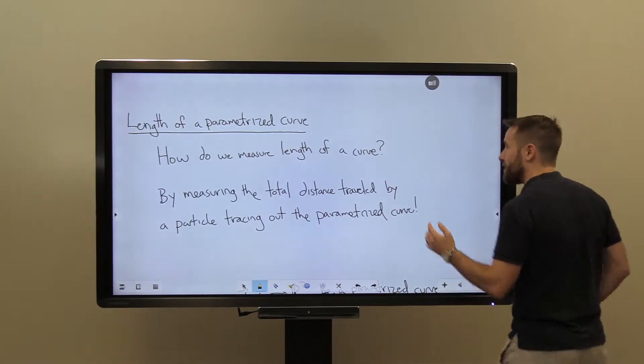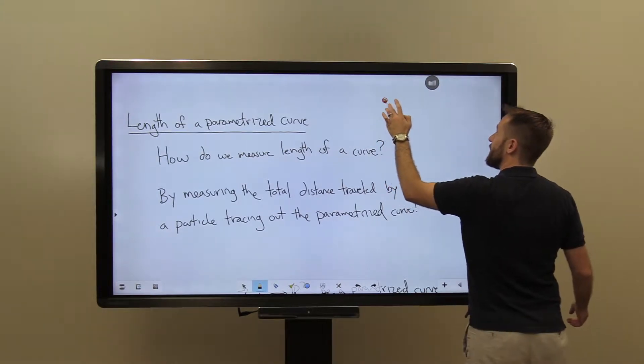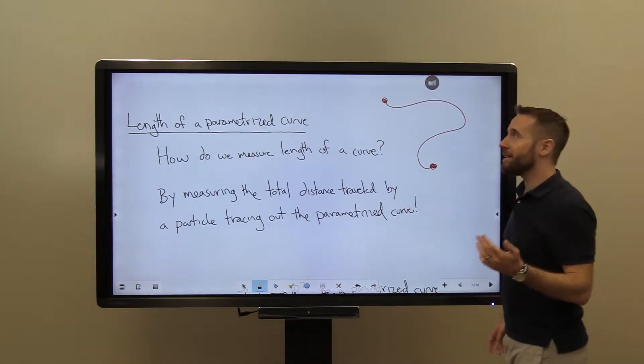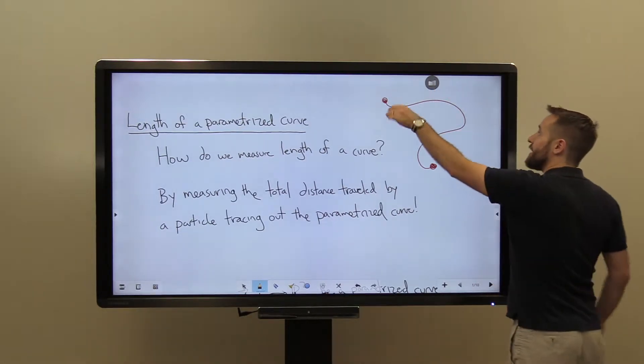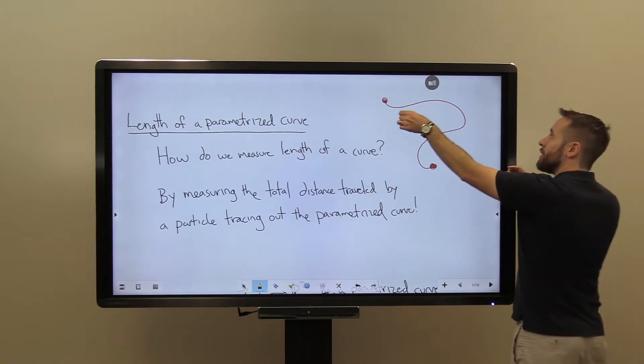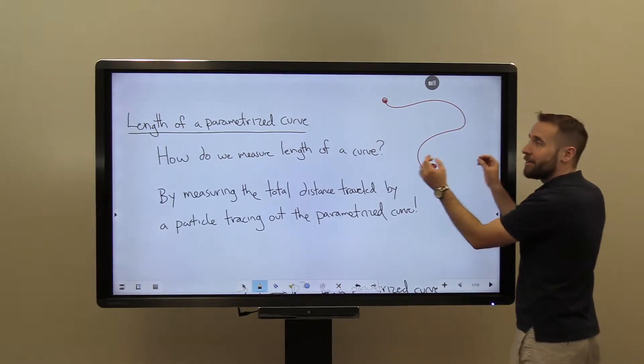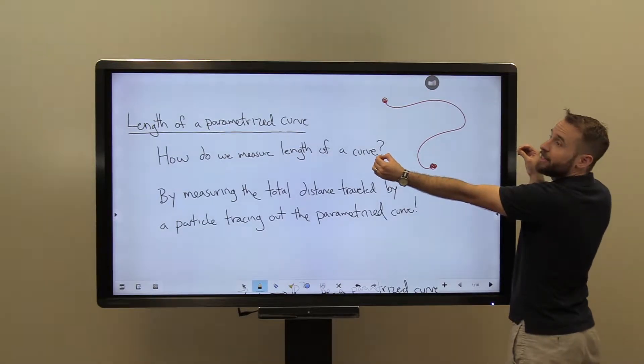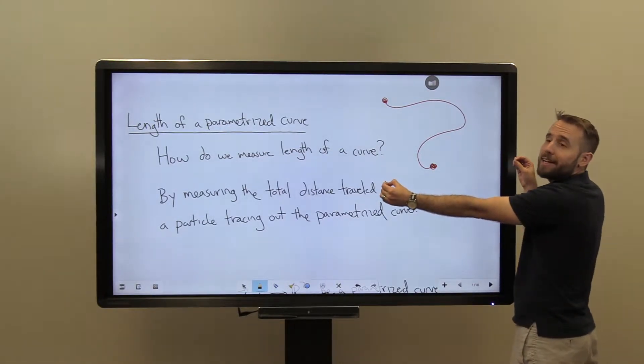And when I say length, what I really mean is if I were to draw my curve, so here's a curve like this, what I really mean is the total length of this curve as if it were a piece of string. So I could sort of lay a piece of string on here and then tauten or tighten that piece of string to make it a straight line, measuring the length of that straight line.